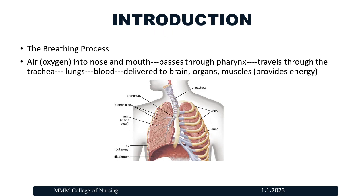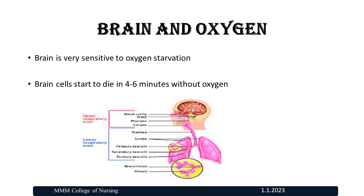What is the breathing process? Air into the nose and mouth passes through the pharynx. It will travel through the trachea, lungs, blood, delivery to the brain, organs, and muscles. This is the anatomy and physiology of the respiratory system.